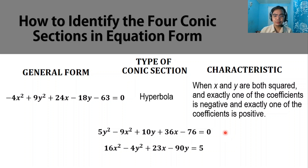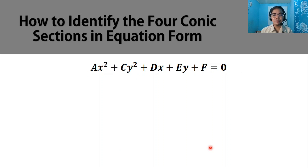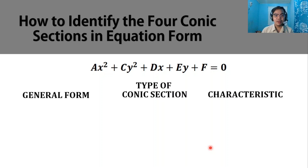Another example: 16x squared minus 4y squared plus 23x minus 90y equals 5. When x and y are both squared and one coefficient is positive and one is negative, this is an equation of a hyperbola. Now let's discuss another characteristic by examining the general form ax squared plus cy squared plus dx plus ey plus f equals 0, looking at the values of a and c.